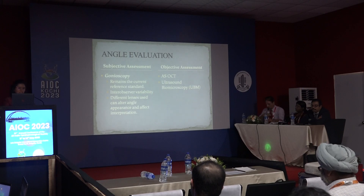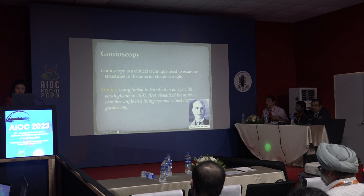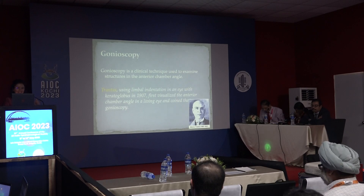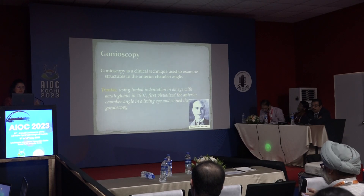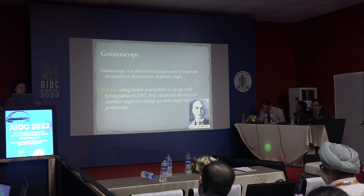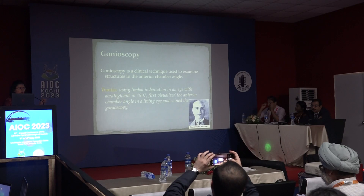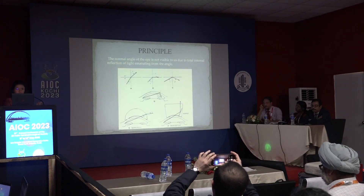Gonioscopy is the current gold standard, although there is inter-observer variability and there are different lenses available. Gonioscopy is basically a clinical technique used to examine the structures of the anterior chamber angle. Trantas used the limbal indentation technique in an eye with keratoglobus and first visualized the anterior chamber angle in a live human being. The term gonioscopy was coined by him — gonios meaning angle and scopy meaning to visualize.